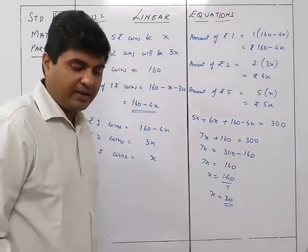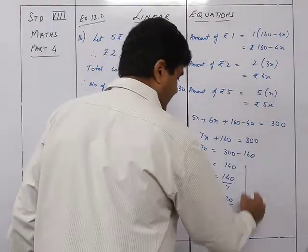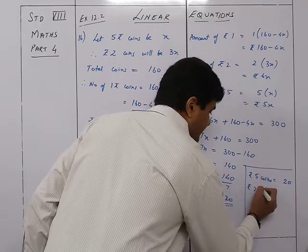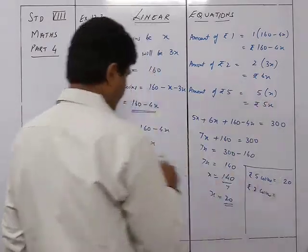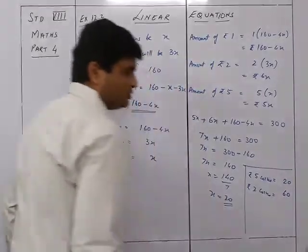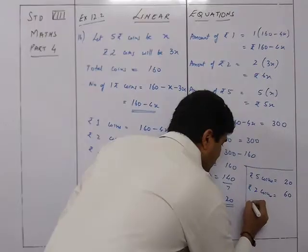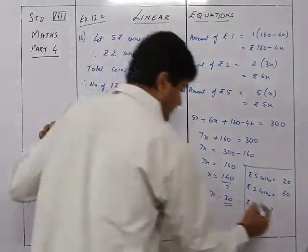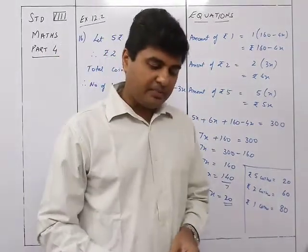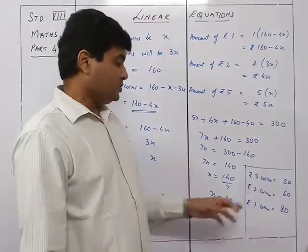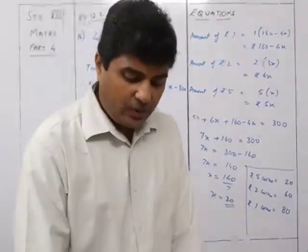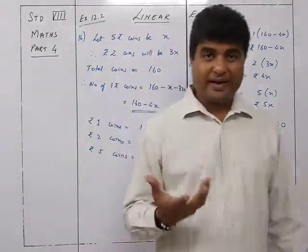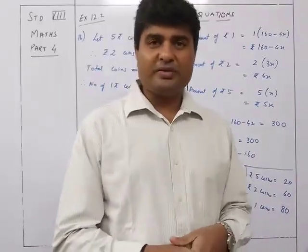So 5-rupee coins = x = 20; 2-rupee coins = 3x = 60; 1-rupee coins = 160 minus 4 × 20 = 160 minus 80 = 80 coins. The answer is: 80 coins of 1 rupee, 60 coins of 2 rupees, and 20 coins of 5 rupees, totalling 300 rupees. That was sum 16 and we continue from sum 17 in the next video.